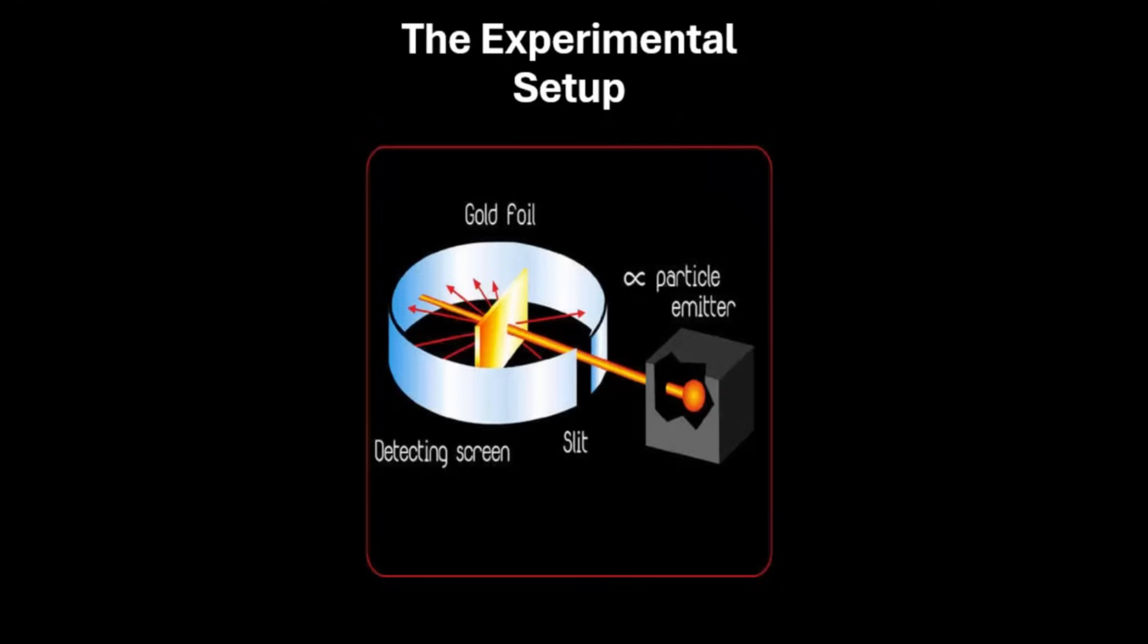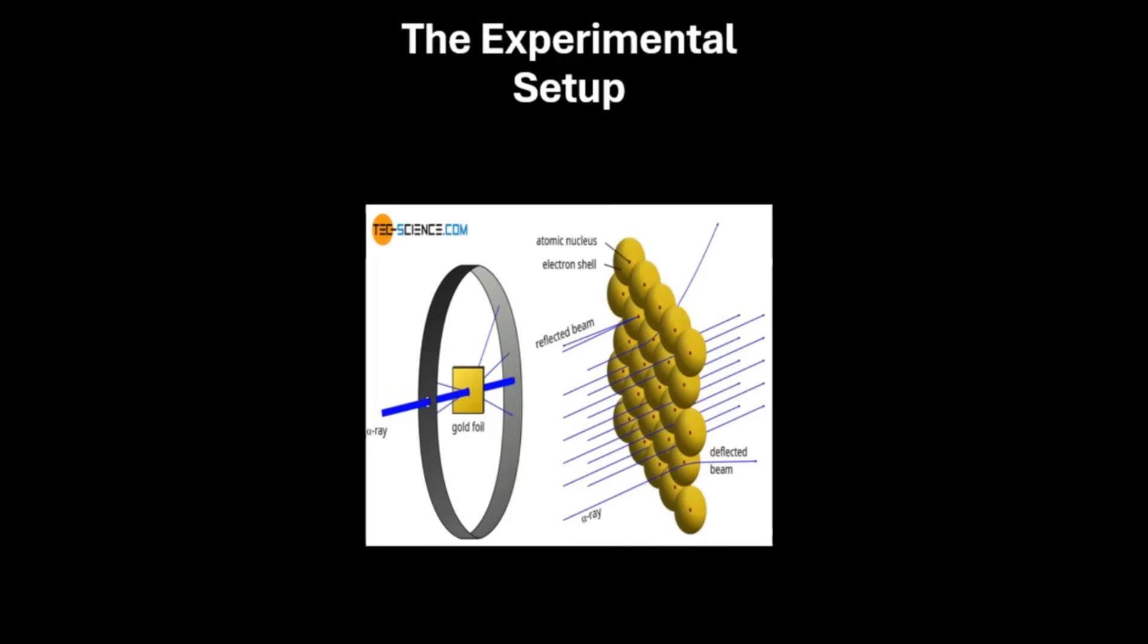Alpha particles were generated from a radioactive source and directed towards the gold foil. Detector screens surrounding the foil were used to capture the scattered alpha particles. This arrangement allowed the scientists to observe how alpha particles interacted with the atoms in the gold foil and provided critical insights into the atom's structure.